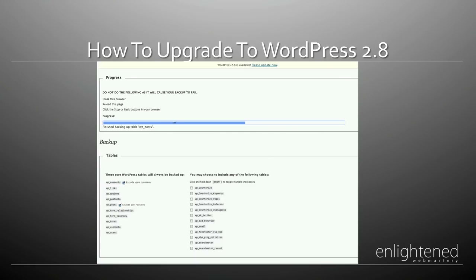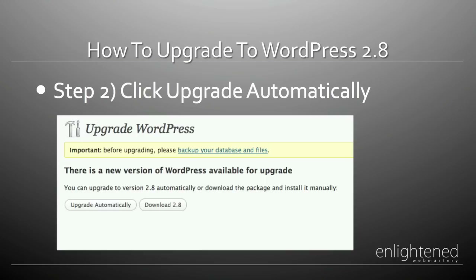Next, click that little button at the top that says 'WordPress 2.8 is available, please update now.' This takes us to step two. Once you click that link, choose 'Upgrade Automatically.' This is a one-step process that does the whole thing for you.